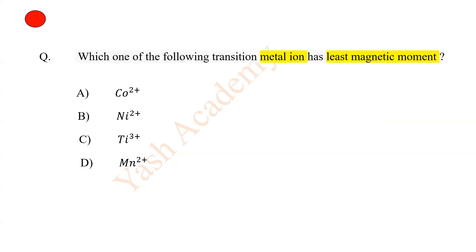This is the last question of this video. Which one of the following transition metal ion has least magnetic moment? C. Ti3+. Thanks for watching this video.